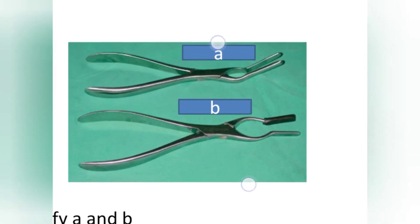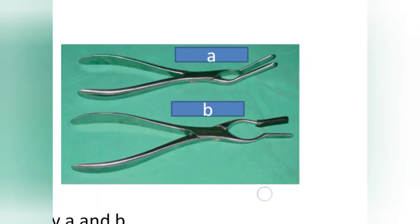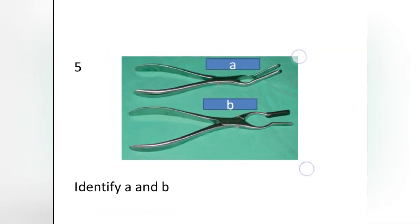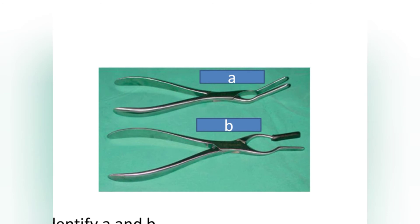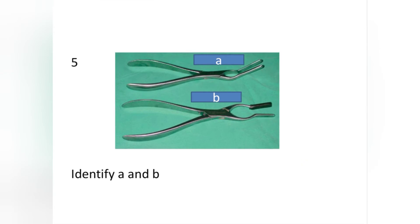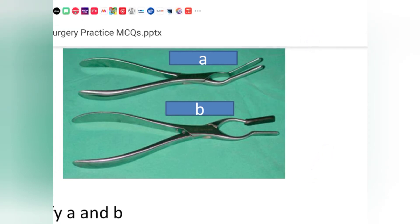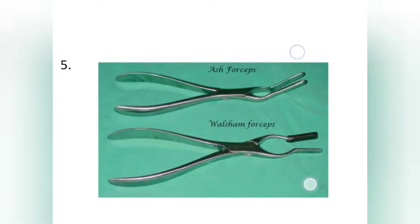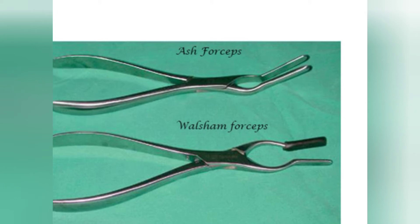Next question — you can see two instruments numbered one and two. You have to identify them. They are more or less similar instruments, but the first instrument's beak is slightly bent upward. The first is Ash's forceps (S-forceps), and the second is Walsham forceps.